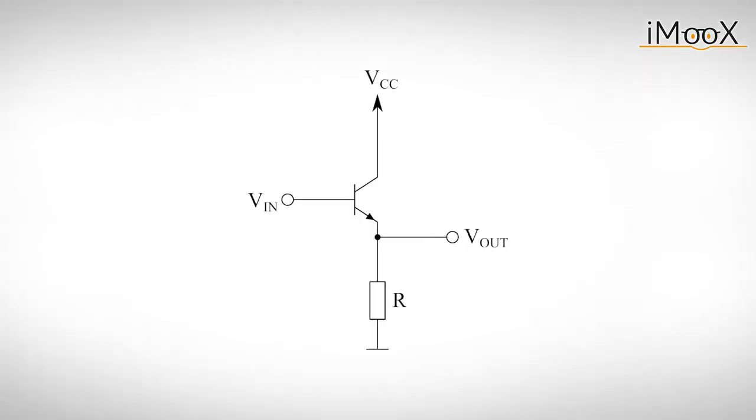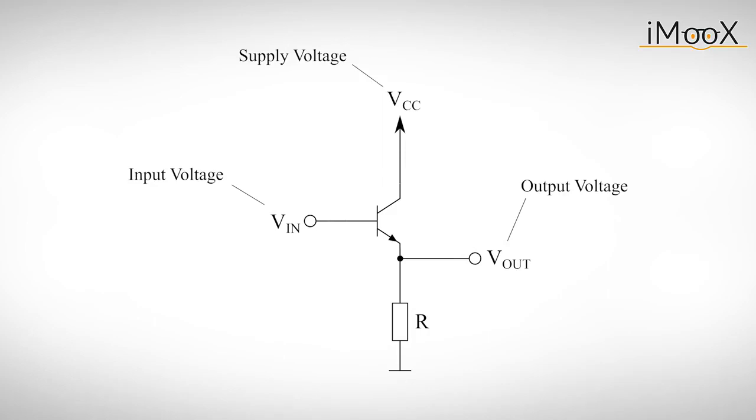The transistor is supplied by two voltage sources. One at the base, which we further refer to as input voltage, and one at the collector, which we call supply voltage. The output voltage of the transistor circuit is located at the emitter.